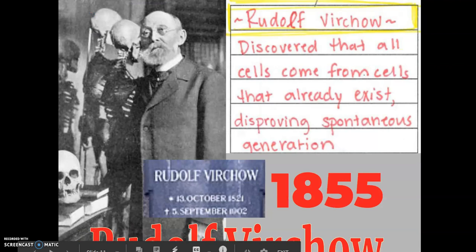Last but not least, we have Rudolf Virchow. His contribution — omni cellula e cellula — was about the origin of cells, specifically the last part of the cell theory. What he came up with is that cells come from other cells, which was another step in disproving spontaneous generation.